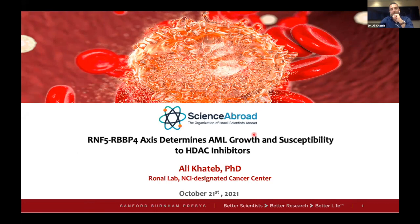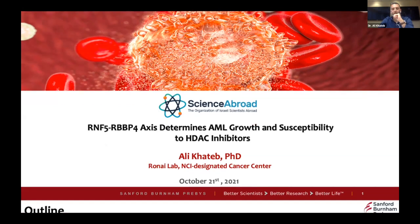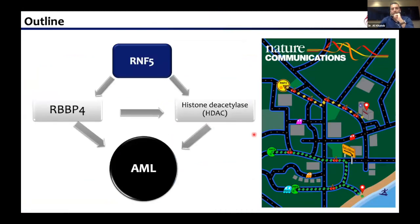Today I will be discussing a study that was published recently in Nature Communications, where we identified the ubiquitin ligase RNF5 as a key player in acute myeloid leukemia development. I will be presenting today about three components: ubiquitin ligase RNF5, the epigenetic regulator RBB4 that we identified as an RNF5 substrate, and how these two components regulate the sensitivity of AML cells to histone deacetylase inhibitors.